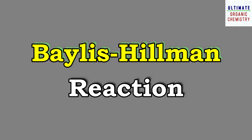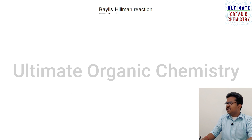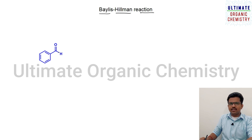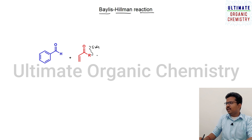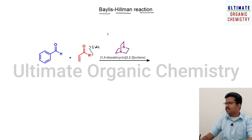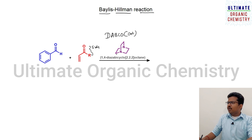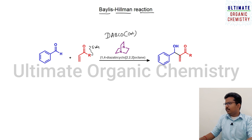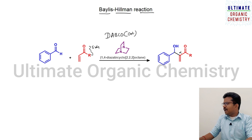Today I am going to discuss a reaction known as the Baylis-Hillman reaction. This reaction involves the reaction of an aldehyde — generally aldehyde is used as an electrophile — when it reacts with an alkene having an electron-withdrawing group, for example a ketone, which is considered to be electron-withdrawing. They react together in the presence of a catalyst known as 1,4-diazabicyclo[2.2.2]octane, in short called DABCO, which is a base catalyst.